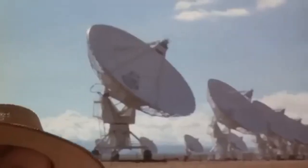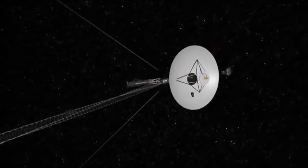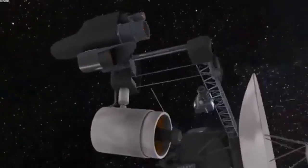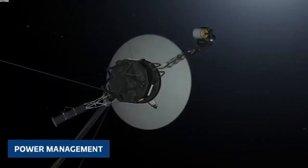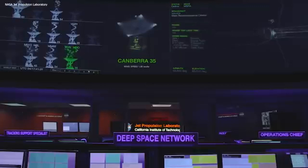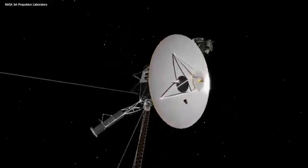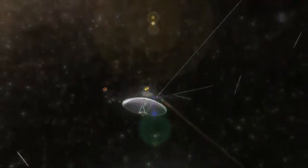Voyager 1's high-gain antenna ensures findings are transmitted back to Earth, maintaining communication with mission control. Voyager 1 and Voyager 2 provided the first direct evidence of the heliopause in 1993, a critical milestone in our understanding of the interstellar medium. The heliopause marks the boundary between the solar wind and the interstellar medium. Both Voyager spacecraft detected a substantial decrease in solar wind speed and an increase in interstellar medium pressure. Voyager 1 reached the heliopause in August 2012, making it the first human-made object to enter interstellar space.